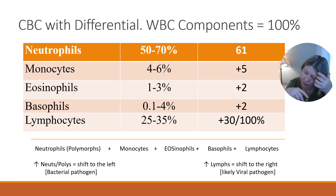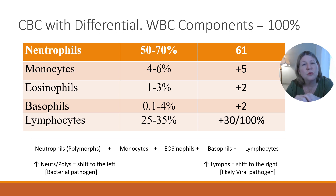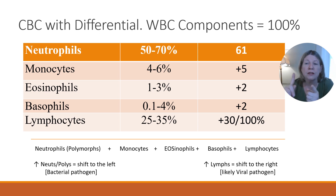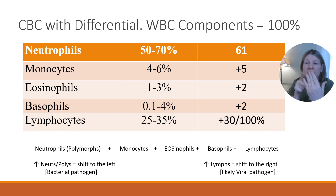Bringing us on to the thought of CBC with differential — that's the white blood cells getting a closer look. The white blood cell components within this differential all add up to 100%. The components are the neutrophils, monocytes, eosinophils, basophils, and lymphocytes. Let's go over the general range of each one.